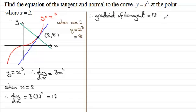Now the gradient of the normal, we'll just say and normal. Remember that's got to be the negative reciprocal of this. We just negate this, that's minus 12, and then invert it. So the gradient of the normal is going to be minus 1/12.